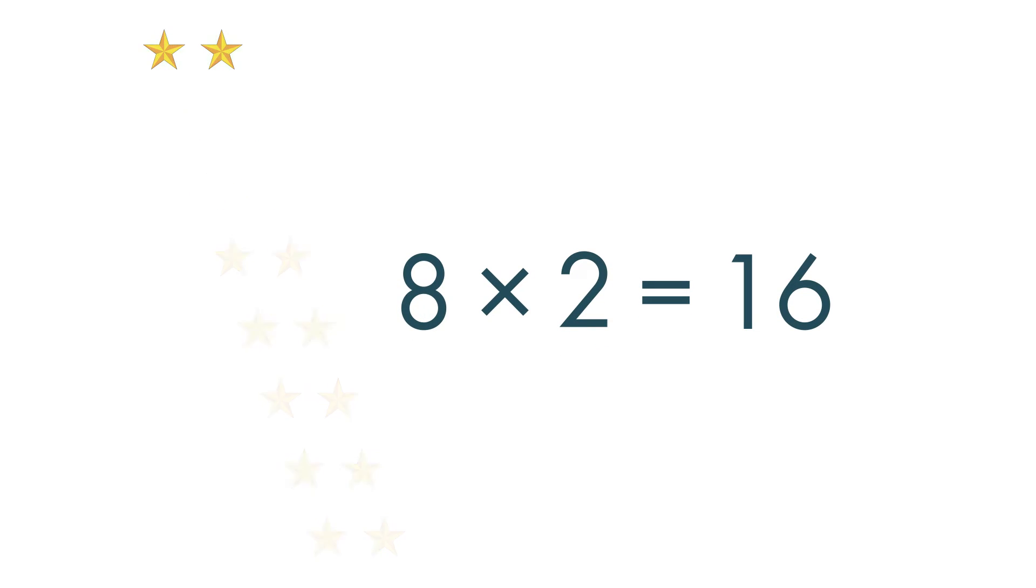Did you know that multiplication and division are related? There are 8 rows of 2 stars. If we count all the stars, there are 16. 8 times 2 equals 16.